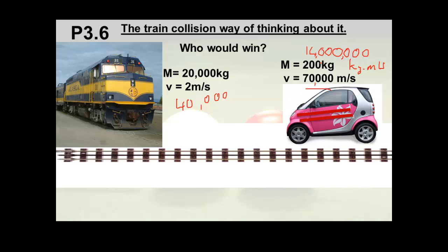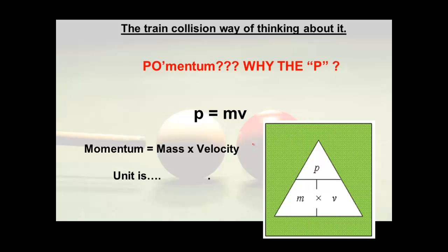So in this case the go-fast red stripe smart car would win if you rammed into a train at that speed. But you know, 70,000 meters per second, at that speed he would be burning up in the atmosphere and would probably just explode in a fireball collision with the air before you got any of these guys. Anyway, it's fun to think about.